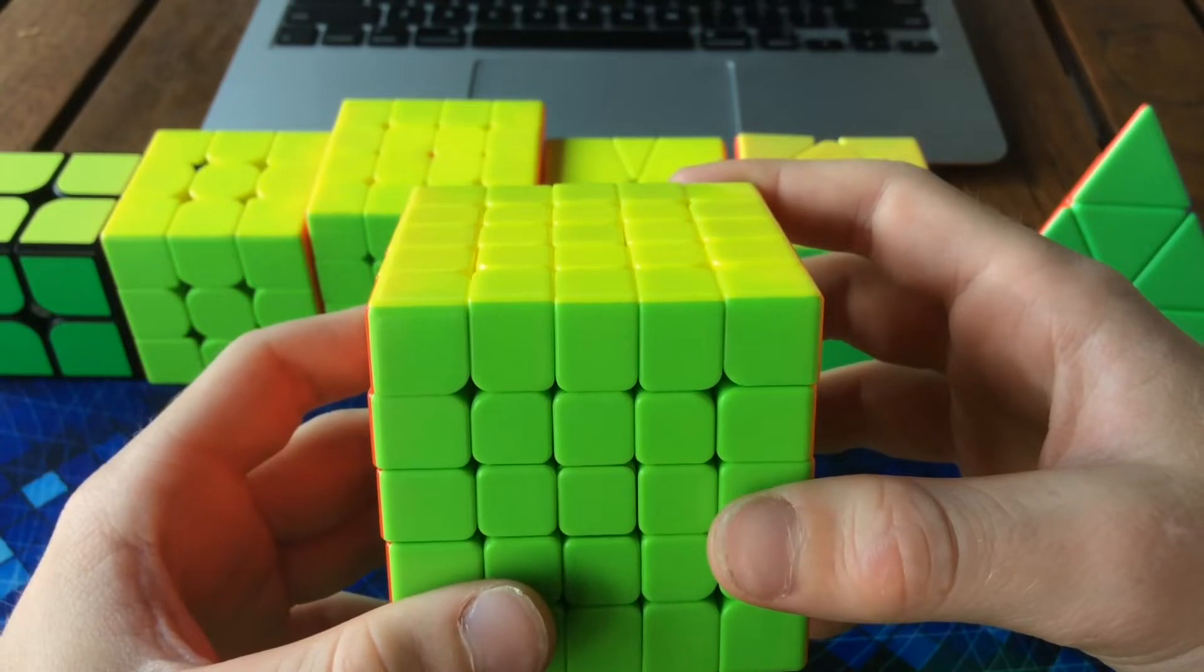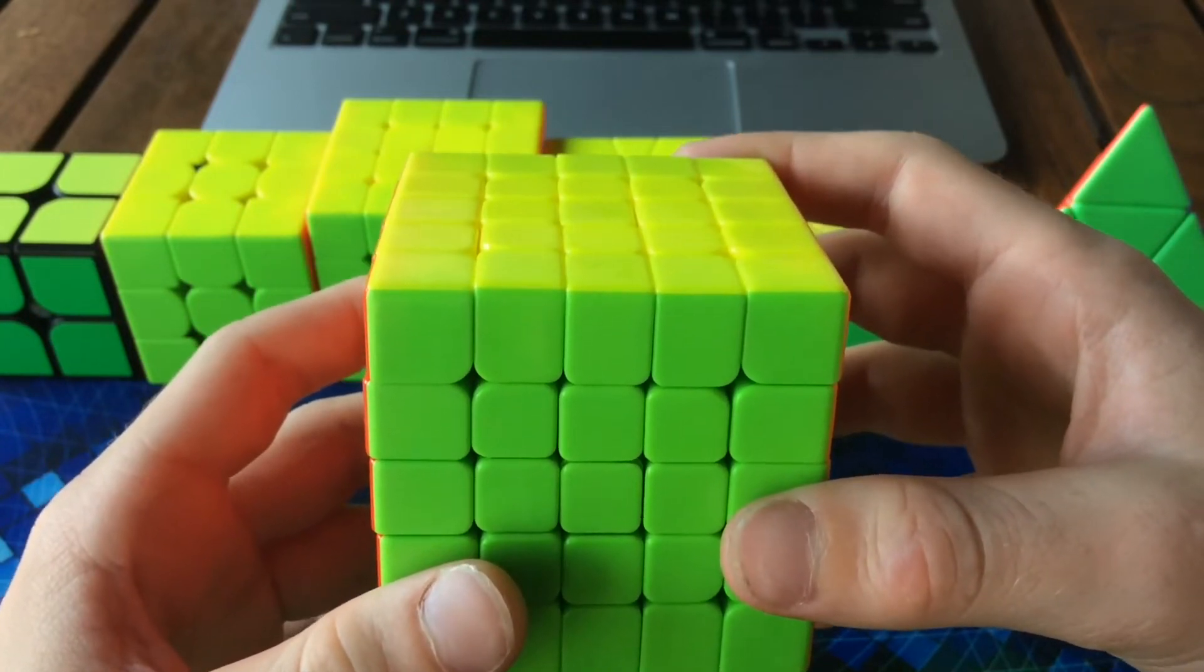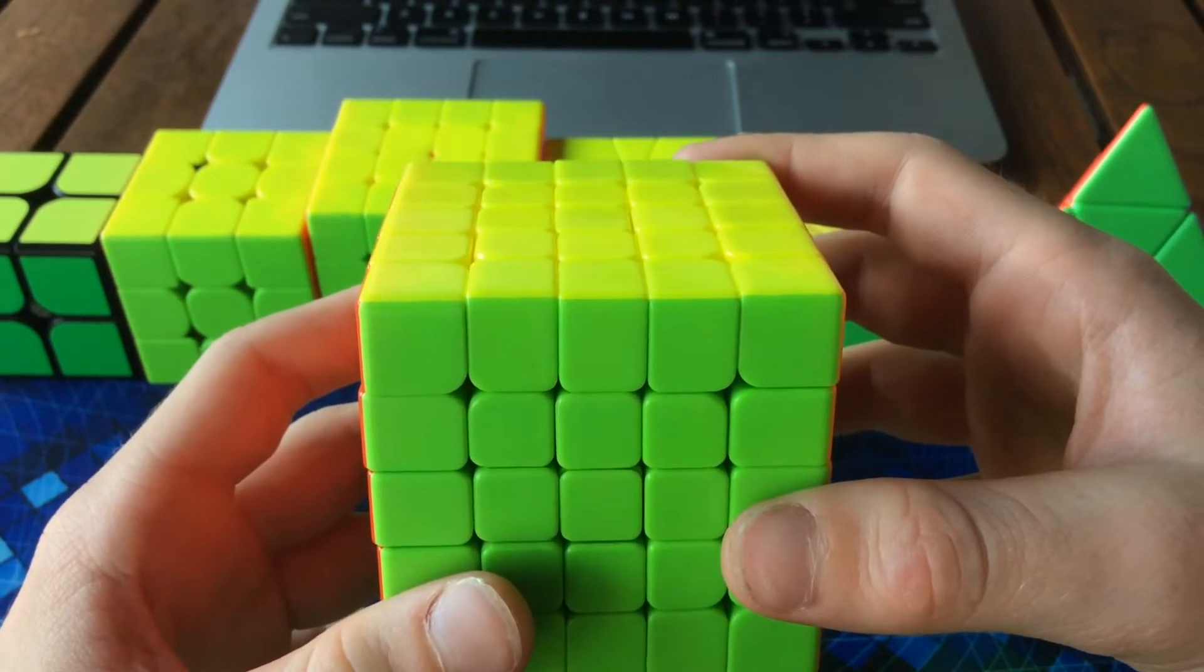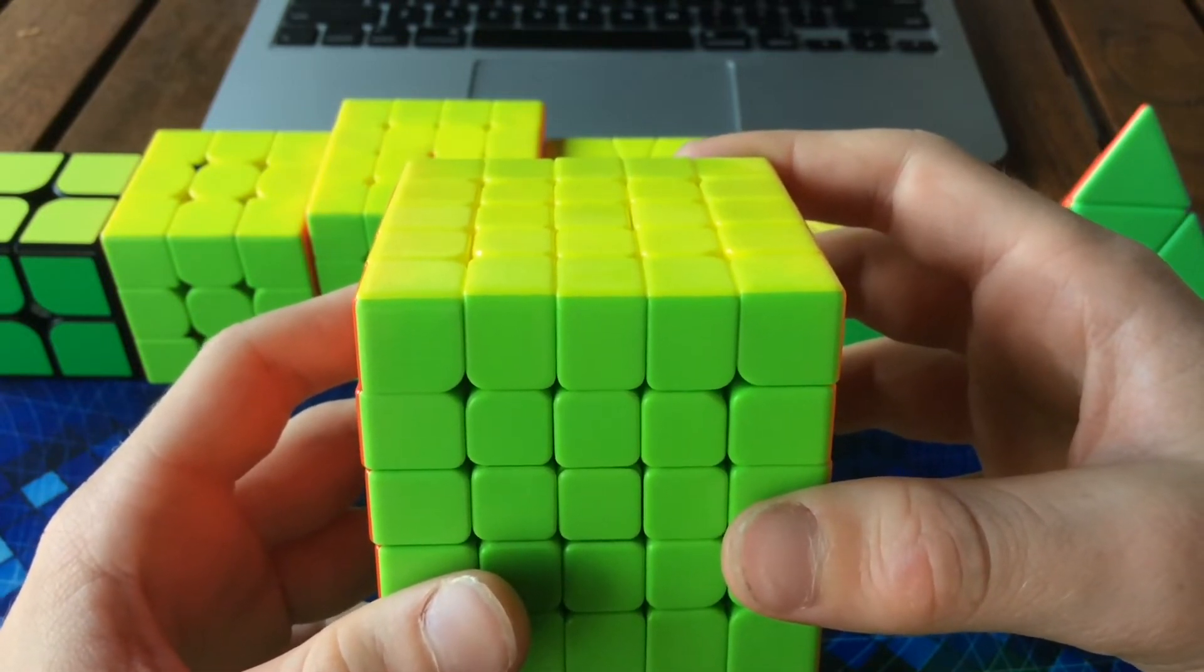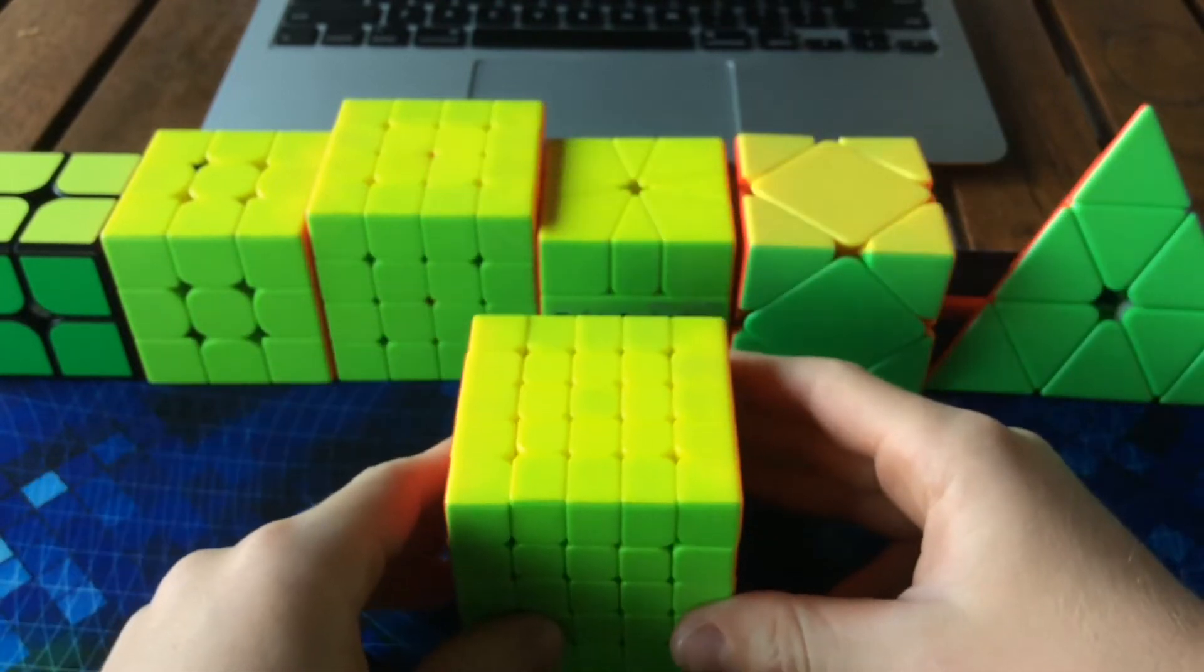But if I do compete, my goal is probably just to get a single, which I have to get a time sub two minutes 45. So that's my goal for five by five.